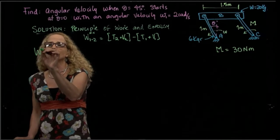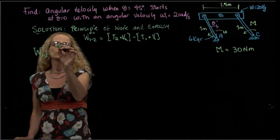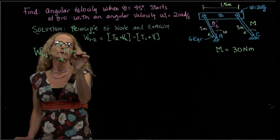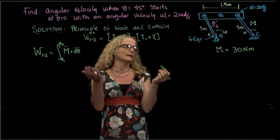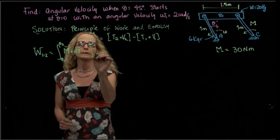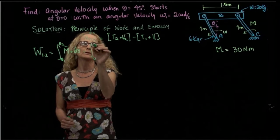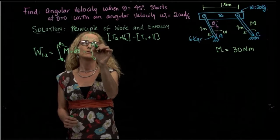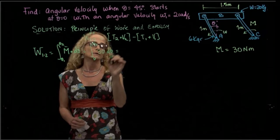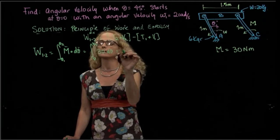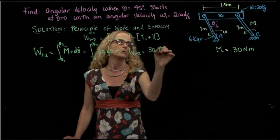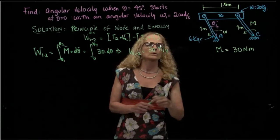The only element that does work here is the applied moment. As you remember, the work done by a moment between positions one and two is the integral of the moment times the change in angle. So I will integrate from zero to 45 degrees, which is pi over four, and the moment is 30 newton-meters times delta theta. The work done by the moment is 30 times pi over four joules.